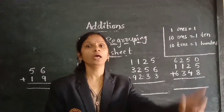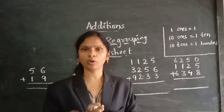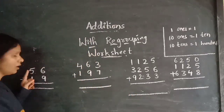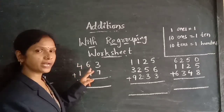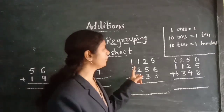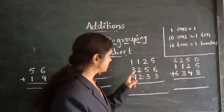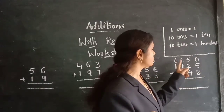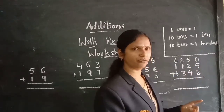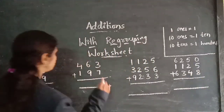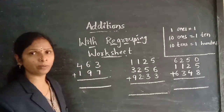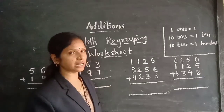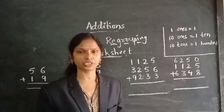Yes children, I hope you understood the additions with regrouping. With the activity I solved some problems, and the third activity also on the board I solved some problems. Come on, let's do the worksheet on this. First number: 56 plus 19. Second problem: 463 plus 197. And third problem: 1,125 plus 3,256. And fourth: 9,233. Last problem: 6,250, 1,125, 6,348 children. First two problems for first class children, and all problems for second and third class children as homework.